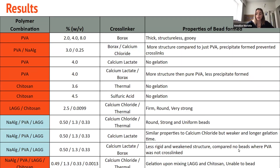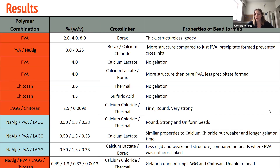We first started with PVA gel beads, but moved on because the beads did not have enough structure and turned out very gooey and thick. We then did research on different polymers and tested chitosan, low acyl gellan gum, and sodium alginate. The chitosan beads did not gel at all, so we moved on from that. Low acyl gellan gum and chitosan did gel, but did not have all the properties we wanted. We also tested a mix of sodium alginate, PVA, low acyl gellan gum, and chitosan together, but unfortunately when these were mixed together they gelled prematurely and were unable to form beads, instead forming one large thick substance.